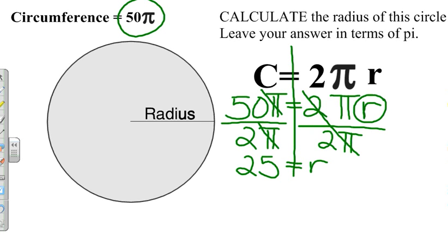Your radius is 25. You do not have any units here for circumference. It's just 50 pi. You don't know if it's centimeters, inches, or kilometers. So you don't have to worry about your units with the radius. Your answer is radius equals 25.